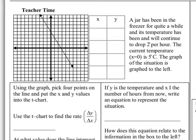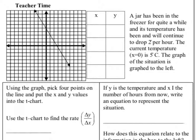So we're first going to look at this situation. A jar has been in the freezer for quite a while, and its temperature has been dropping and will continue to drop 2 degrees per hour. The current temperature at x equals 0 is 5 degrees. The graph of the situation is graphed to the left. We're going to start with the real-world situation and think about how we can use this to fill out our XY chart.